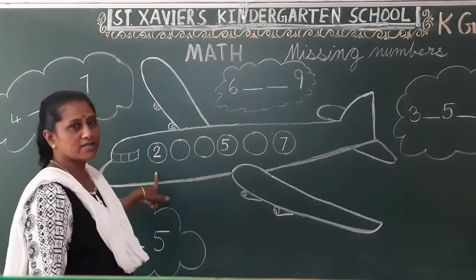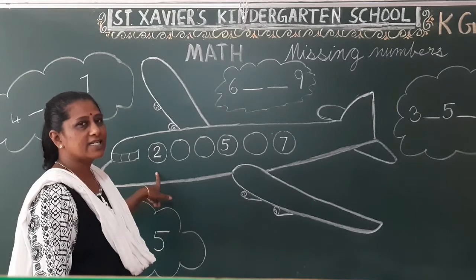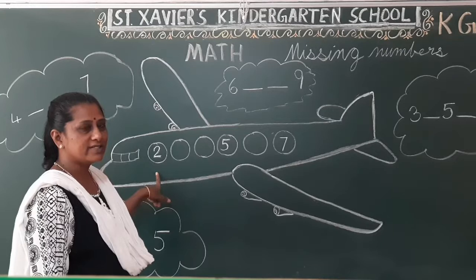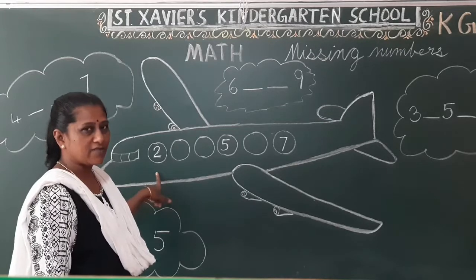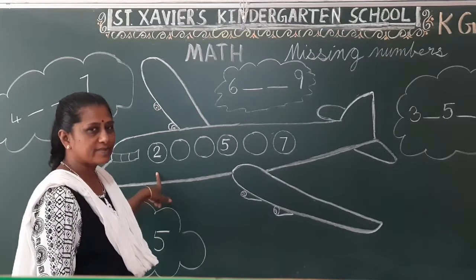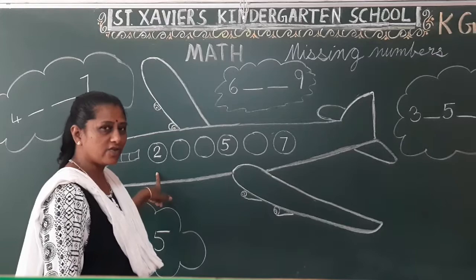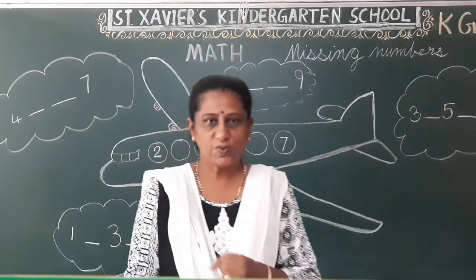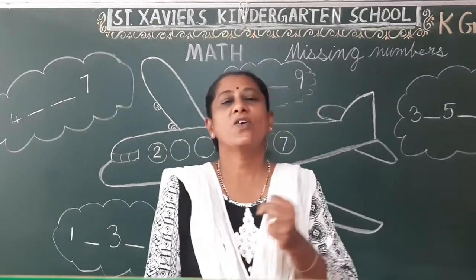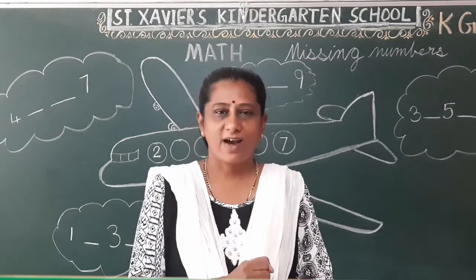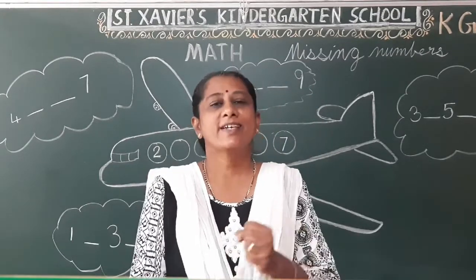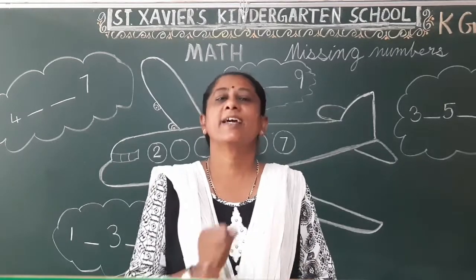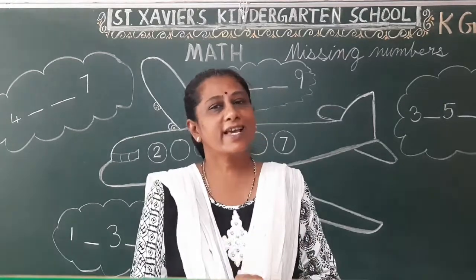Now, what number is this? Two. What comes after two? Can I revise the numbers one to ten? Ready, all of you? Revise: one, two, three, four, five, six, seven, eight, nine, ten.